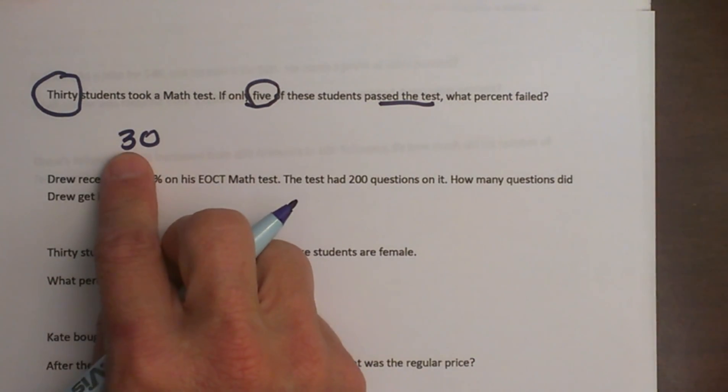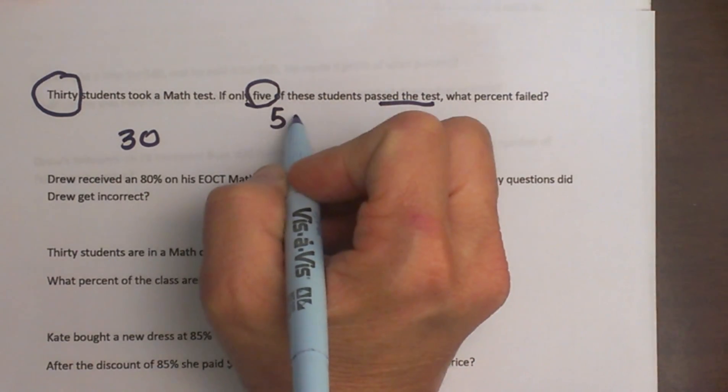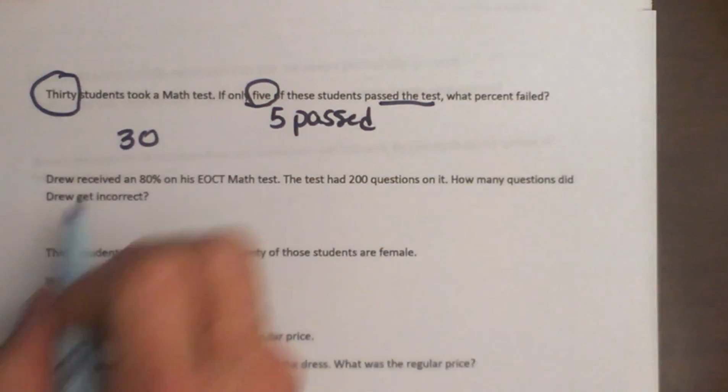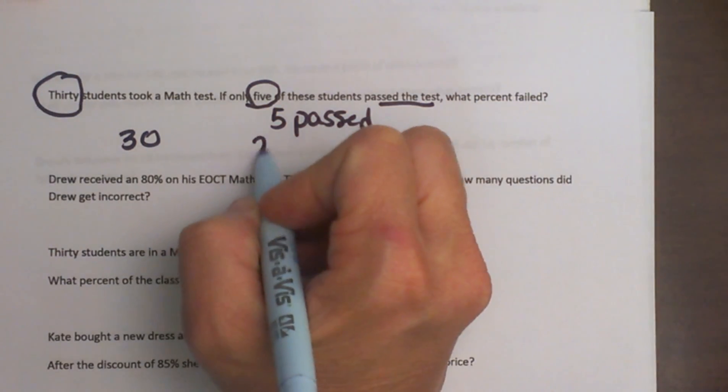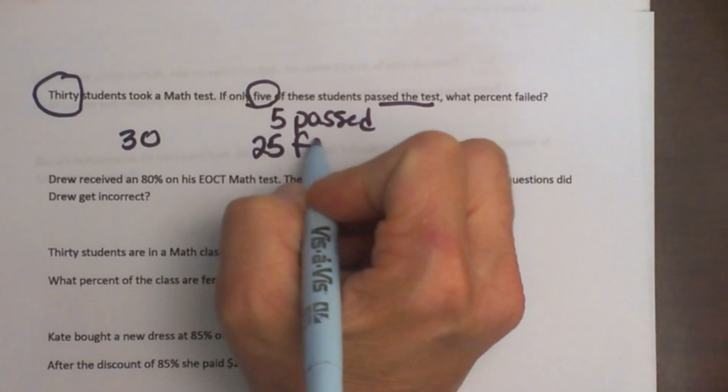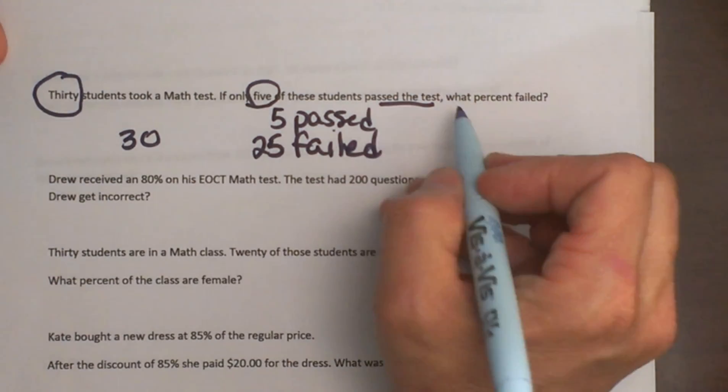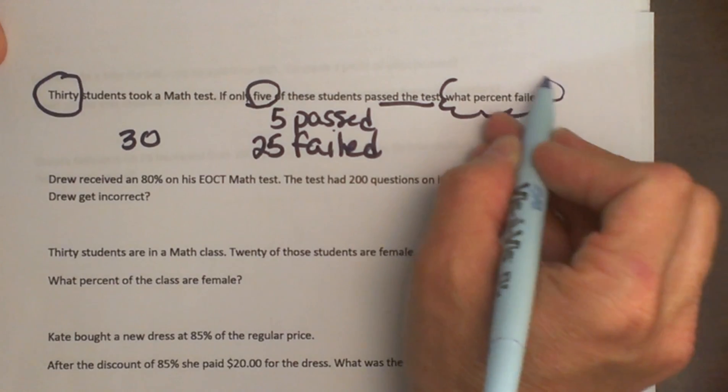So if 5 passed the test, then how many failed? We have 30 students and if 5 passed that means 25 failed. So there is the breakdown. And then the question. Always go down to the question.